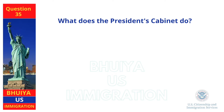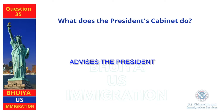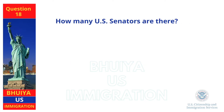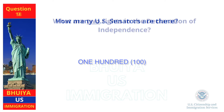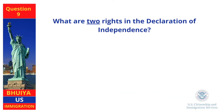What does the President's Cabinet do? Advises the President. How many U.S. Senators are there? One hundred.